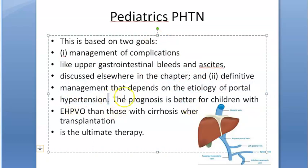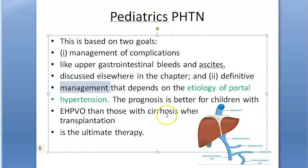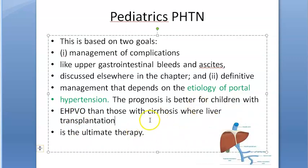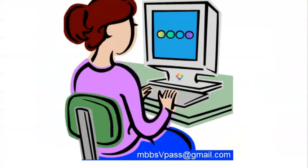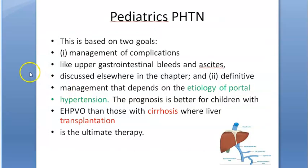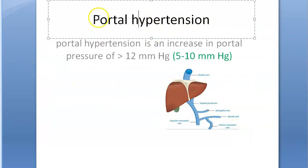Treatment involves managing complications and treating the underlying cause of portal hypertension. For EHPVO, better management options exist. For cirrhosis — an irreversible condition — liver transplantation is required. Other complications like ascites are managed by draining fluid or reducing fluid volume. That covers portal hypertension from a paediatrics perspective.